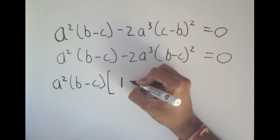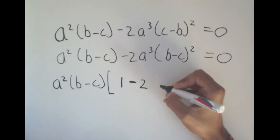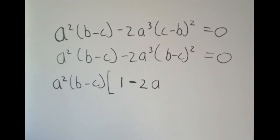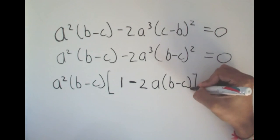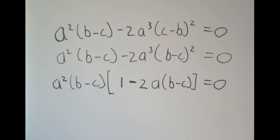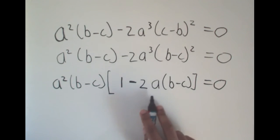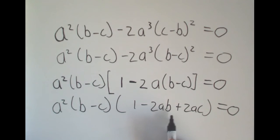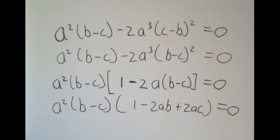So we end up with a²(b − c)[1 − 2a(b − c)] = 0. Now there's nothing left we can do in the bracket in terms of factorization. But we need to collapse the square brackets by multiplying through, so that the whole thing is just terms inside one bracket. We get a²(b − c)[1 − 2ab + 2ac] = 0. Remember that the minus needs to be distributed into the bracket, so that's how we end up with a minus and a plus. This is my fully factorized form.